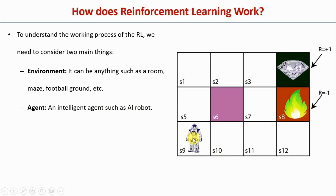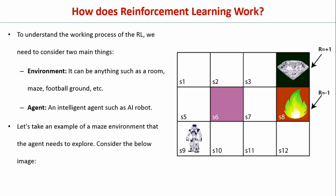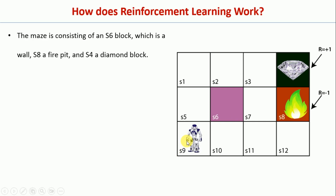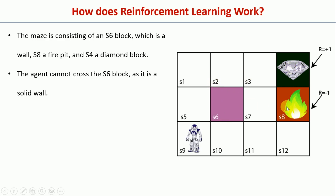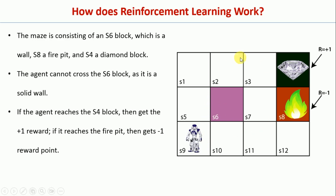The task of this particular robot is to reach the goal, which is S4. What the robot has to do is follow the shortest path — an optimal path — and go to this particular goal state. We also have S8, which is the fire or danger, and S6 is the block. This robot cannot pass through S6.